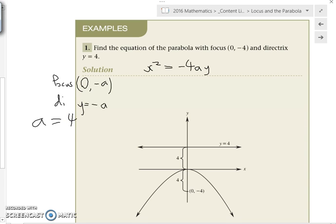For all those out in video land, he just stuck four fingers up at me. 4 or minus 4? You tell me. Oh, that shouldn't say minus a. It's going to catch me on those things. It should say y equals a. So what's a? You were right the first time I was wrong. Well done, 4.